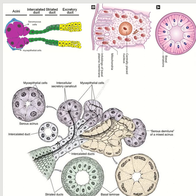You see this is the intercalated duct — this is the cross section of the intercalated duct. This is the cross section of the striated duct. You see that striation is present in the peripheral part. This striation occurs due to the infolding of the basal plasma membrane.